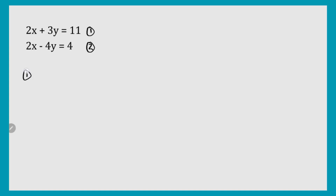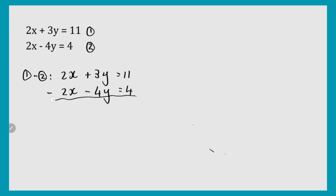We can say first equation subtracted by the second equation, and I'm going to write them out again. The second equation is 2x minus 4y equals 4. So now you subtract these two equations: 2x minus 2x is 0x. Positive 3y minus minus 4y is 7y — because of the double minus, it changes into a plus. And 11 minus 4 is 7, so you are left with 7y equals 7.